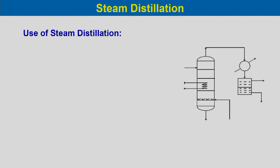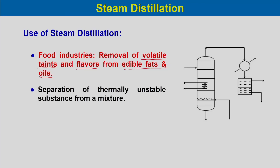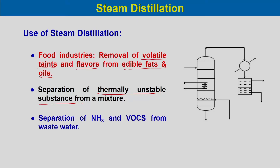Steam distillation is used in food industries for removal of volatile taints and flavors from edible fats and oils. It is also used for separation of thermally unstable substances from a mixture — for example, separation of ammonia and VOCs from wastewater — which can be separated by steam distillation without thermal degradation.